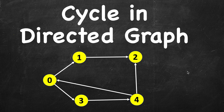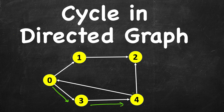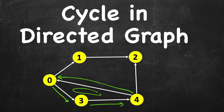In this video we will study how to find a cycle in a directed graph. Looking at this example, you will immediately notice that there is a cycle: from 0 you can go to 3, from 3 you can go to 4, from 4 you can go back to 0 and repeat. This is different from cycle detection in an undirected graph.